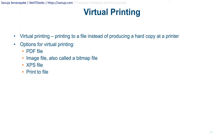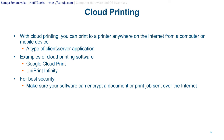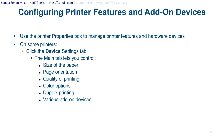Cloud printing allows you to print to a printer anywhere on the internet from a computer or mobile device using a client-server application. Examples of cloud printing software include Google Cloud Print, UniPrint, and Infinity. For best security, make sure your software can encrypt documents for print jobs sent over the internet, or use a VPN connection for remote printing.